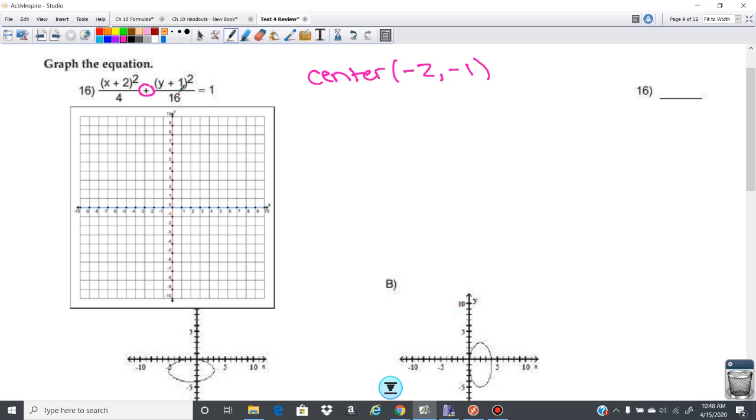So my center is at negative 2, negative 1. Also for the ellipse, the larger number is going to be on the axis. For this one, the larger number is underneath the y, so I know this is going to be going up and down.